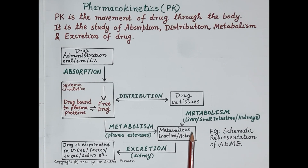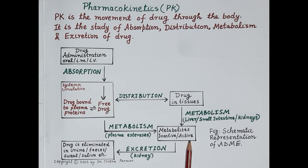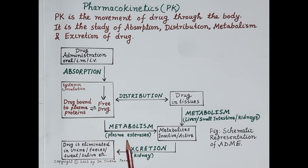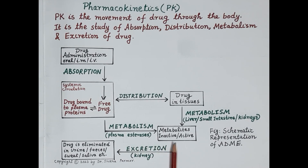In the majority of cases, when a drug is metabolized it produces inactive metabolites. But in a few cases, such as prodrugs, active metabolites are produced. For example, enalapril is a prodrug that is activated in the body once metabolized, producing active metabolites. Drugs like aspirin and cocaine are metabolized in the plasma by plasma esterases.